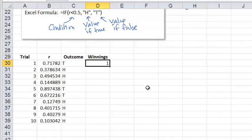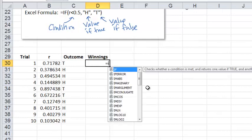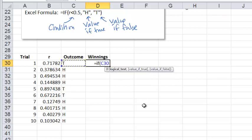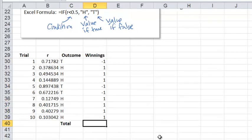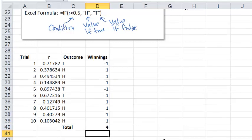We could also calculate the winnings by using the IF formula. So if the outcome is equal to heads, then I win a dollar. If not, then I lose a dollar, so it's minus one. That's my winnings. Then I would just copy this down to the rest. So you got negative ones and ones. Now I calculate the total winnings. I'm going to use a shortcut ALT equal to get the sum. So here I win four dollars. That's pretty good. I like this game.